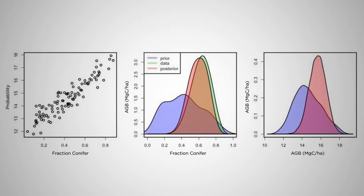If the correlation between these two things is perfect — a correlation coefficient of one — then all of the information about fraction conifer is transferred to updating above-ground biomass. If there's no correlation between these two, then updating fraction conifer has no impact on the above-ground biomass analysis. This idea of borrowing strength across variables works in both directions: if I observe both fraction conifer and above-ground biomass, my posterior estimates of both involve their direct observational constraints and an indirect constraint from their correlation with each other.